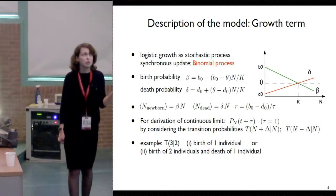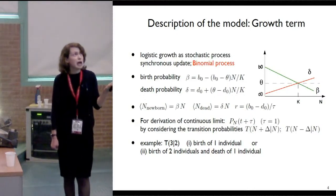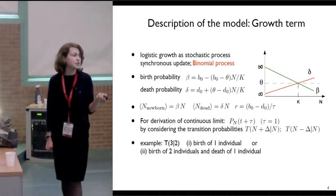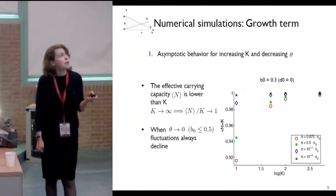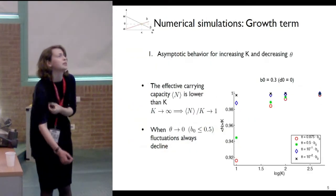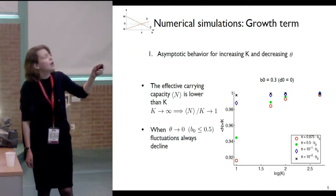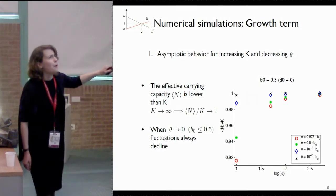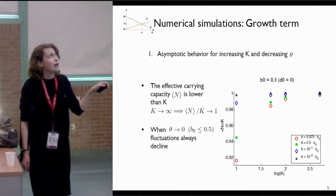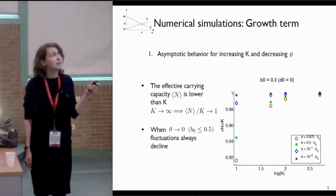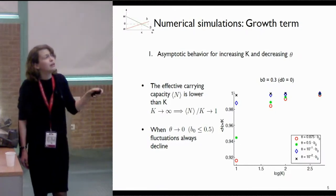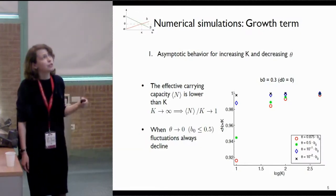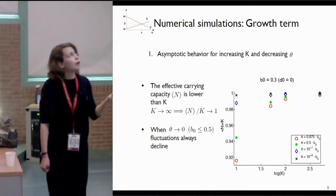This simple stochastic model can be described with a master equation, and by letting the time step go to zero and increasing the number of individuals, we can show that it approaches the logistic growth. Here I would like to present some results with a different level of discreteness of this model, and to do so we change the carrying capacity and the turnover. On the y-axis, we have the effective carrying capacity — the mean number of individuals near the steady state divided by K. On the x-axis, we have the logarithm of K, so K goes from 10 to 1000, and different colors represent different turnover rates.